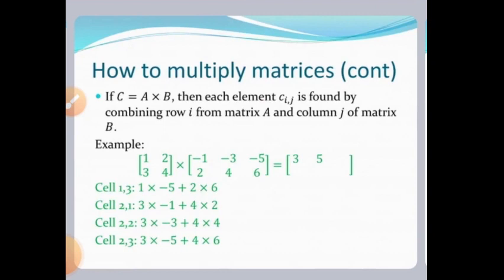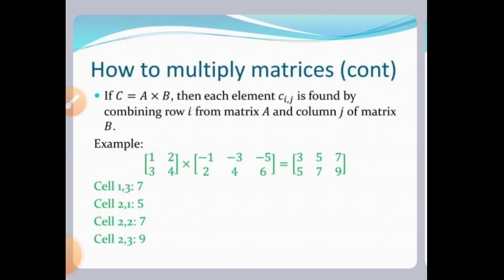Now consider the second row. Multiply by the first column, then the second column, then the third column. Second row × first column: 3×(-1) + 4×2 = 5. Second row × second column: 3×(-3) + 4×4 = 7. Second row × third column: 3×(-5) + 4×6 = 9. So the second row of the answer matrix is 5, 7, 9.